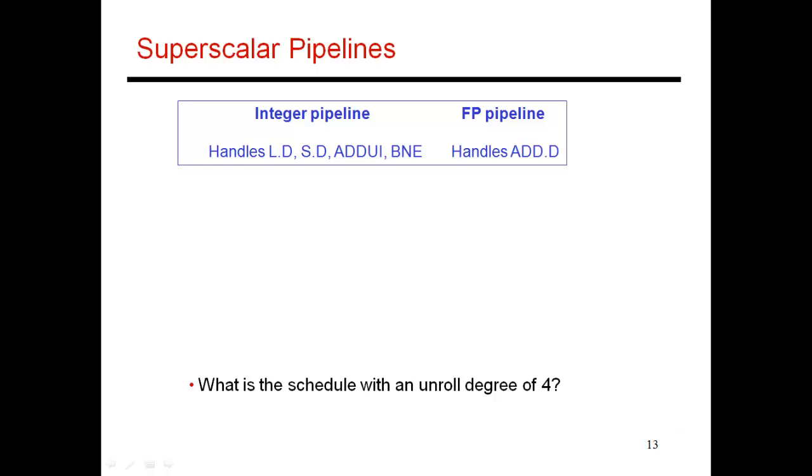In the previous video, we had seen an example of loop unrolling. I'm going to go through one more example of loop unrolling now, but I'm going to complicate my pipeline a little bit. I'm doing this to introduce another concept which is very pertinent to this whole area of compiler-based techniques for high ILP. That's the concept of VLIW.